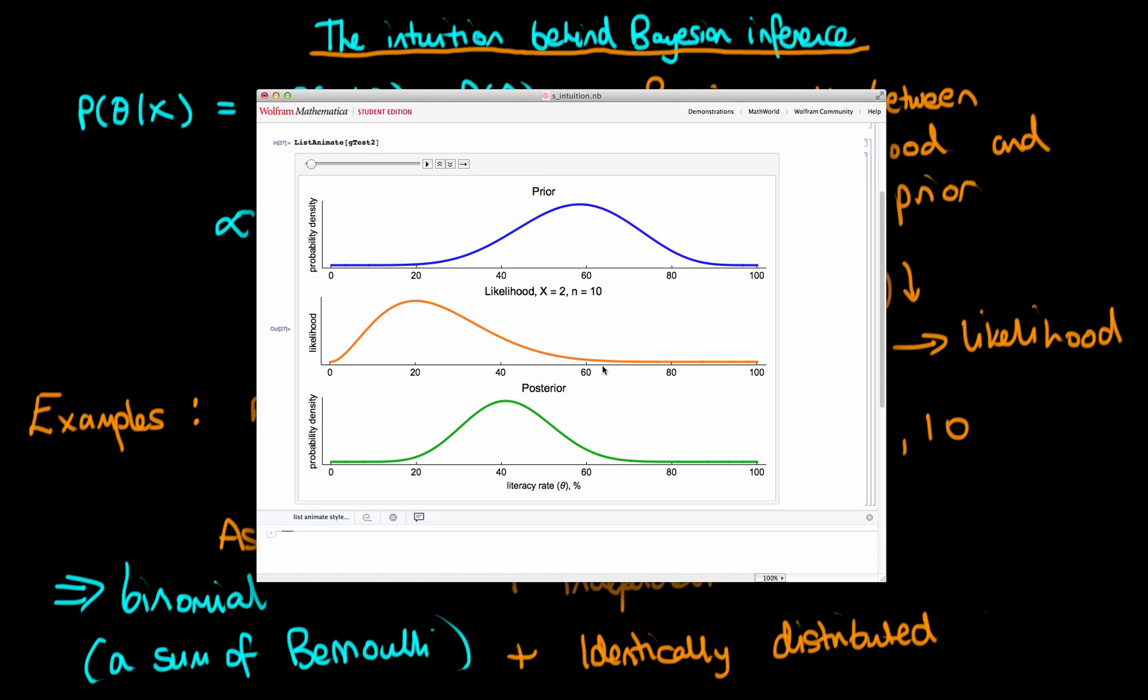Now I'm going to keep the prior constant and the fraction of children I find in my sample that are literate. So here I'm going to keep that fraction fixed at 20%. And now what I'm going to do is I'm going to increase the sample size. So what we see here when we have a sample size of 10 is that the position of the posterior is roughly halfway between that of the likelihood and the prior. But as I increase my sample size, the posterior peak shifts over to the left and it becomes ever closer to the position of the peak of the likelihood. And also we notice that the posterior peak also becomes narrower in accordance with that of the likelihood.